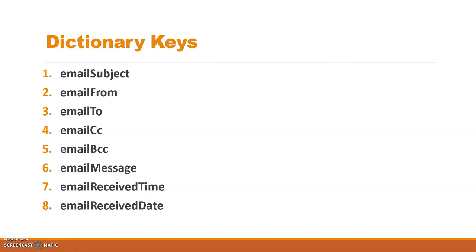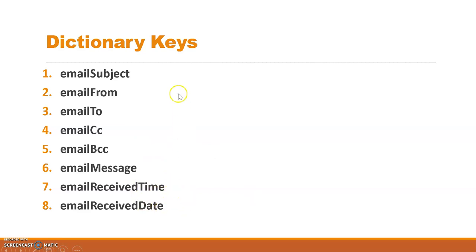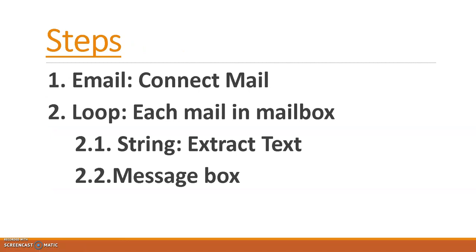These are the dictionary keys available. If you want to extract the email subject, you can extract through the key 'email subject 1'. The key for sender is 'email from', and there is also 'email to' and 'email cc'. If you want to extract the full body of the mail, you can use 'email message'. There is also 'email receive time' for the received time.